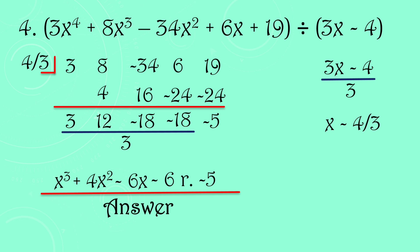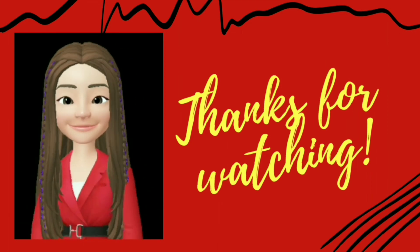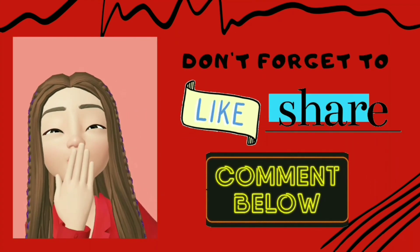You just need to write all the coefficients of the dividend, get the opposite sign of the divisor's last term, then multiply and add until the process is complete. And of course, to get the degree of the quotient, just subtract 1 from the degree of the dividend. I hope you learned something today. Thank you for watching! Don't forget to like, share, comment, and subscribe to my channel. Until next time! Bye!